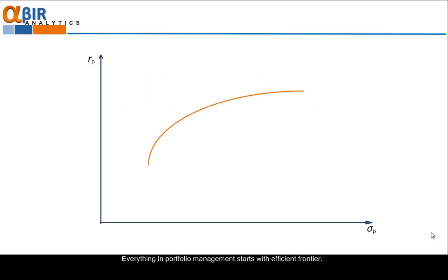Everything in portfolio management starts with efficient frontier. This graph presents the standard risk return characteristics of investments. On axis X the graph expresses the risk, on axis Y a return. The efficient frontier is presented with this curve.